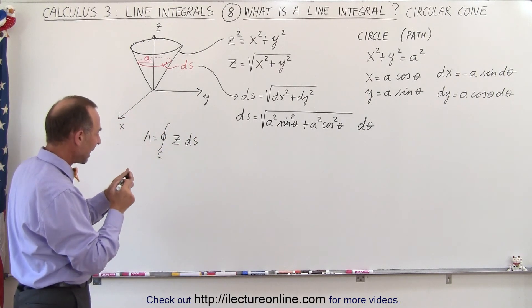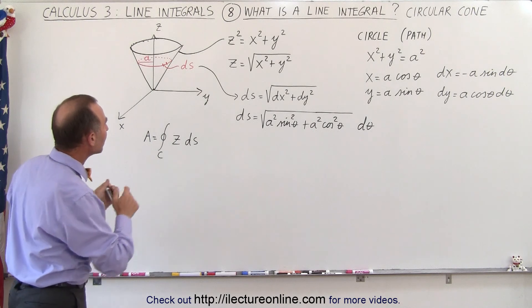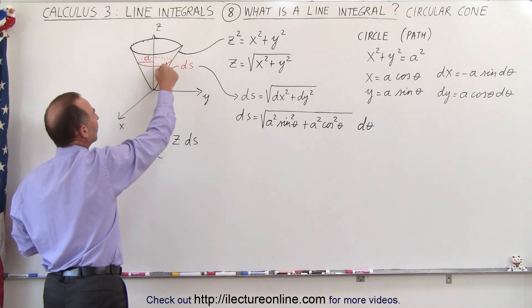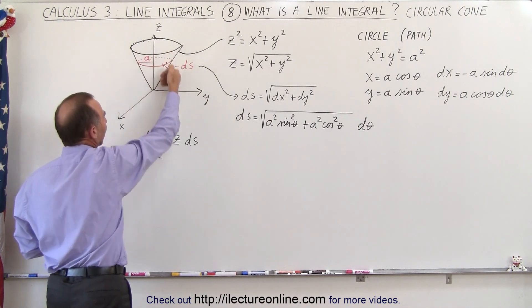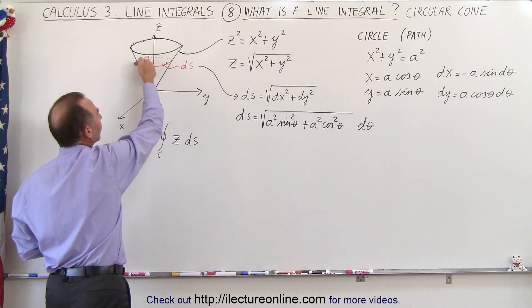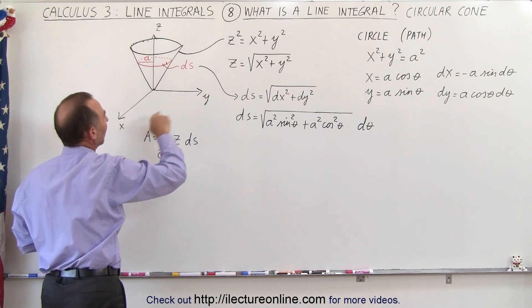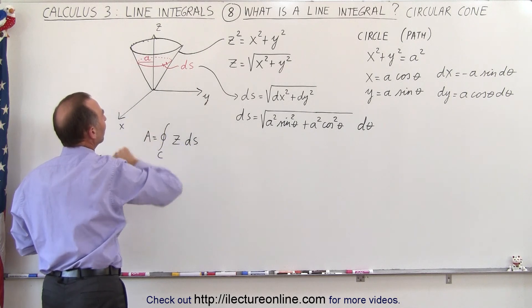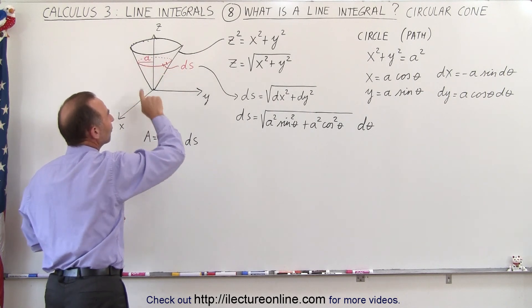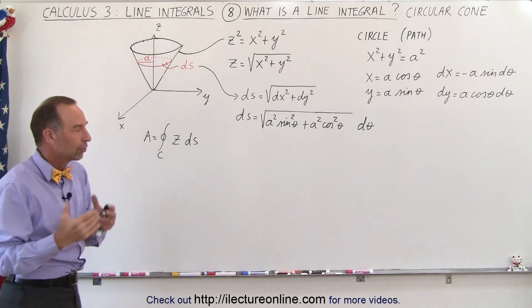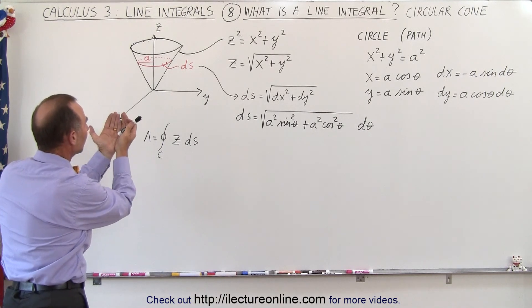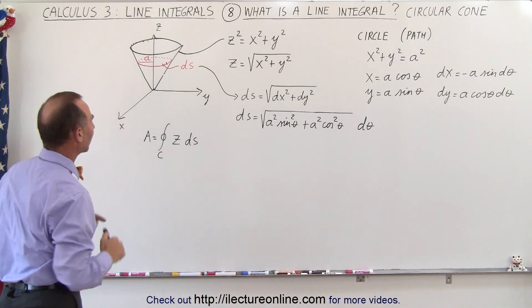Now we can say that the area underneath the z curve — the path that we're going to travel — think of a curtain hanging down from the line all the way around the cone, all the way to the xy plane. It's the area of that curtain that we're going to find by doing this particular line integral, so at least you understand what it is we'll get when we do a line integral.